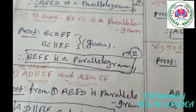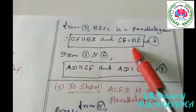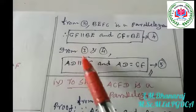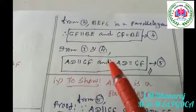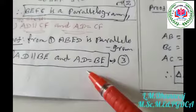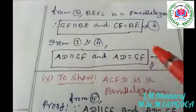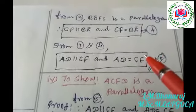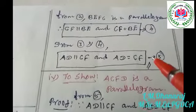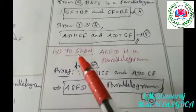From equation two, we already proved BEFC is a parallelogram, so CF is parallel to BE and CF is equal to BE — call this equation four. From equations three and four, we can say AD is parallel to CF and AD is equal to CF — this proves the third subdivision, call this equation five.